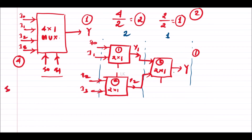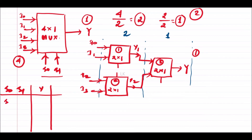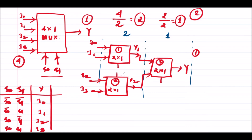To assign the selection lines, we draw the truth table with S0 and S1 and the output. When S1=0, S0=0 → I0 is seen at output; S1=0, S0=1 → I1; S1=1, S0=0 → I2; S1=1, S0=1 → I3. We divide this truth table into two parts: one for I0 and I1 (first multiplexer) and one for I2 and I3 (second multiplexer).